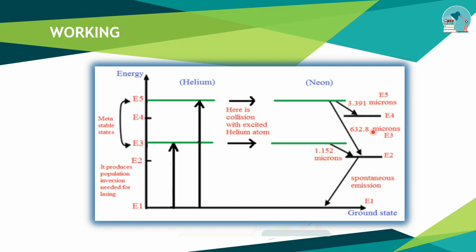We emit three different energies. The primary emission from the Helium-Neon laser is at 632.8 nm — this is the red laser light that is the most commonly used output. The population inversion in neon leads to stimulated emission at 632.8 nm radiation.